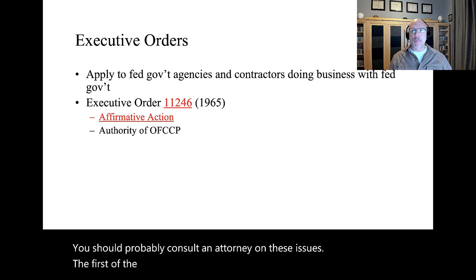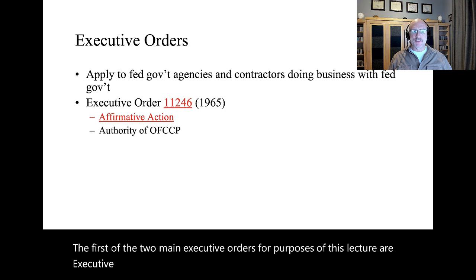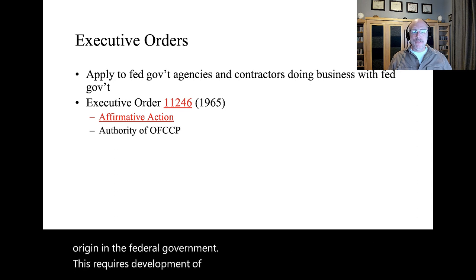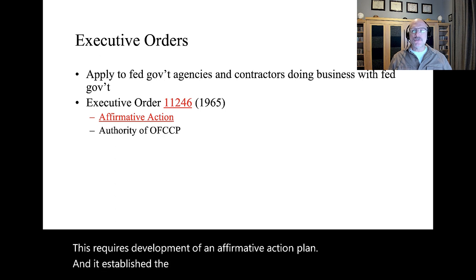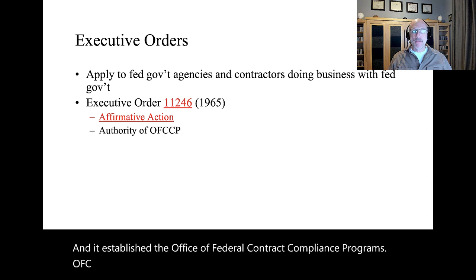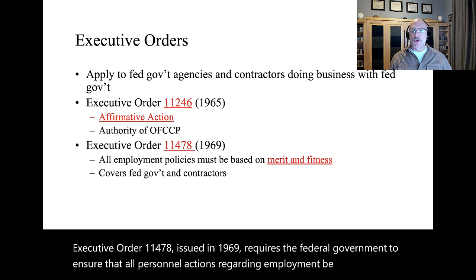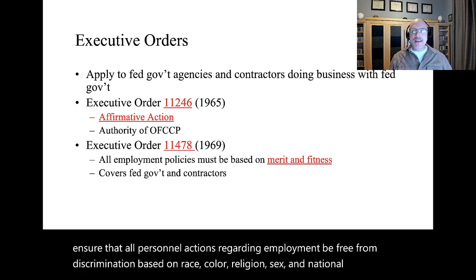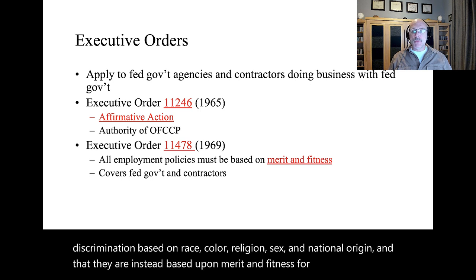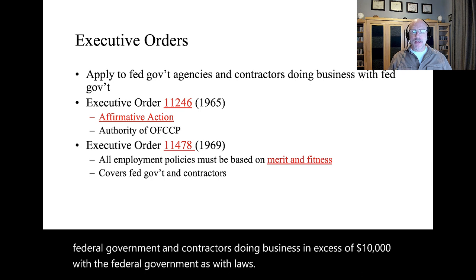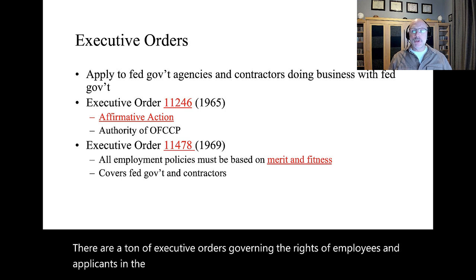The first of the two main executive orders for this lecture is Executive Order 11-246, issued in 1965. It prohibits employment discrimination based on race, color, religion, sex, or national origin in the federal government, requires development of an affirmative action plan, and established the Office of Federal Contract Compliance Programs, or OFCCP. Executive Order 11-478, issued in 1969, requires the federal government to ensure that all personnel actions be free from discrimination and instead based upon merit and fitness for duty. This covers the federal government and contractors doing business in excess of $10,000 with the federal government.